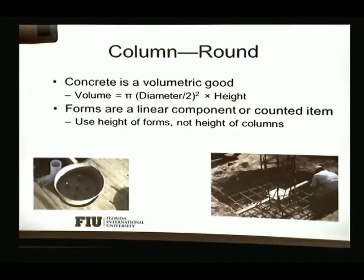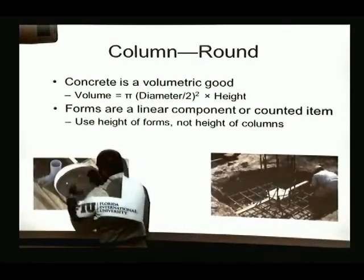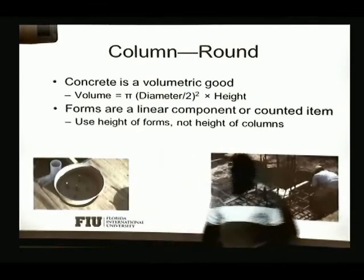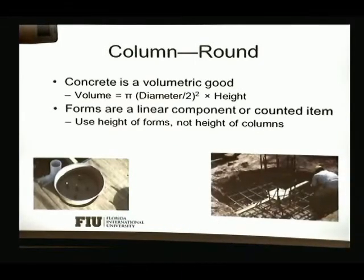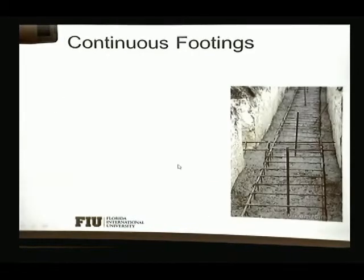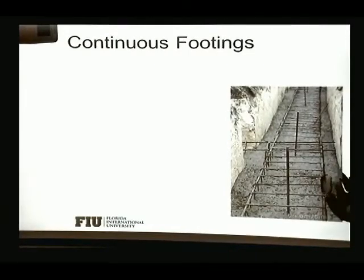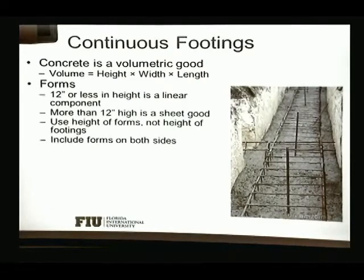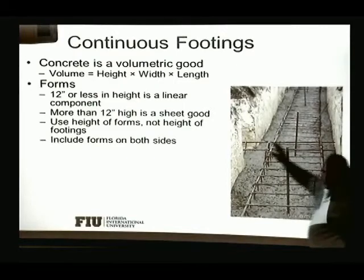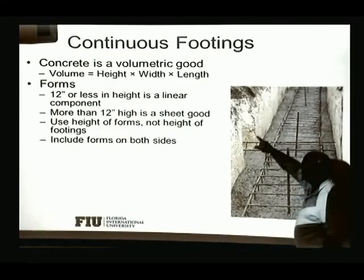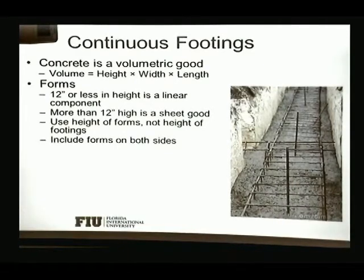Round column forms may be prefabricated in two sections — you bolt them together and pour. For continuous footings, you have a long run of rebar and concrete pouring, so you estimate the volume and the rebar. Depending on soil conditions, you may not need formwork at all — the soil itself acts as the wall holding the footing in place.